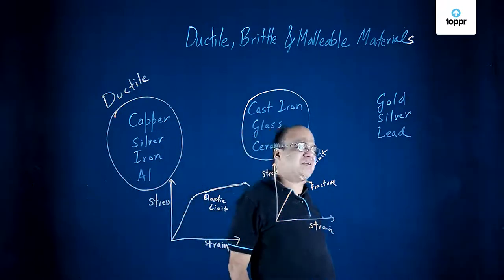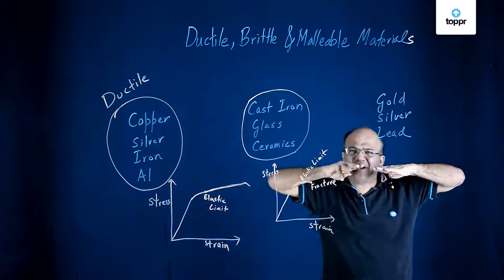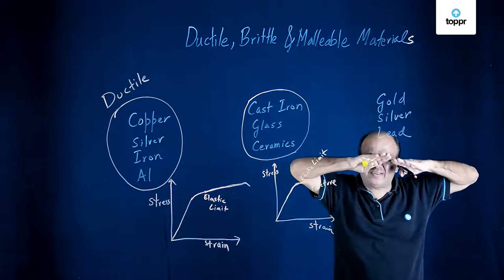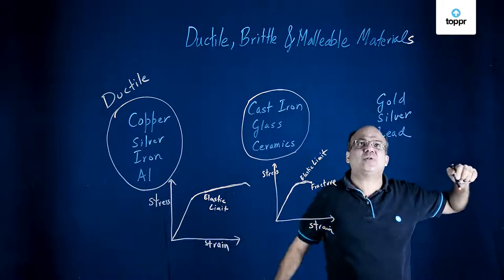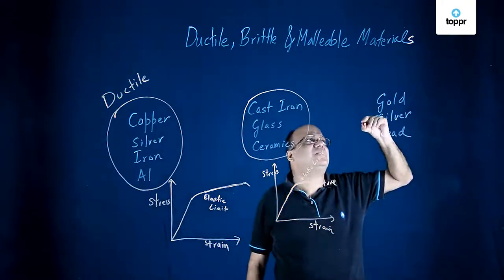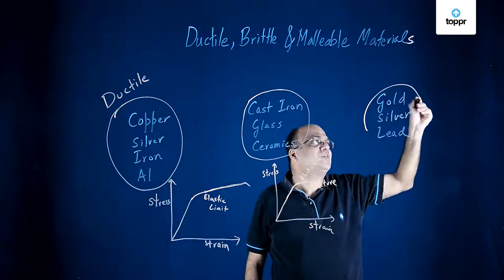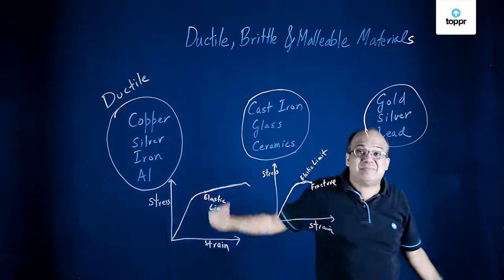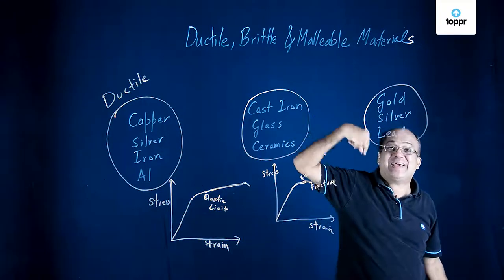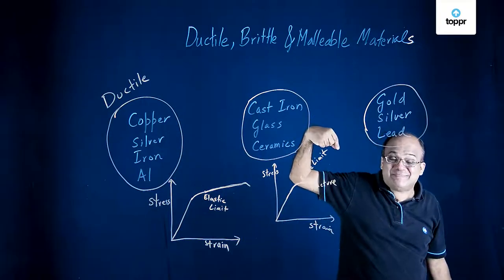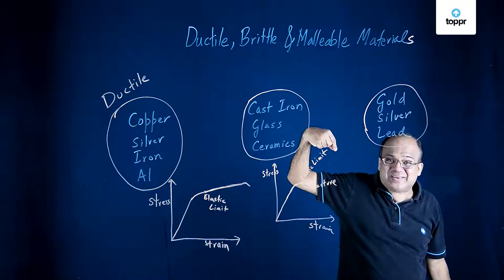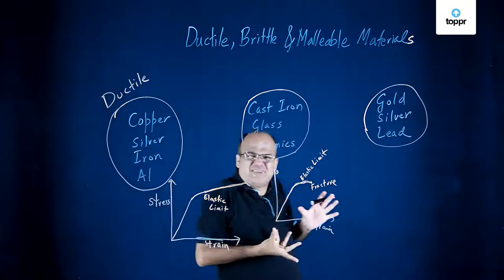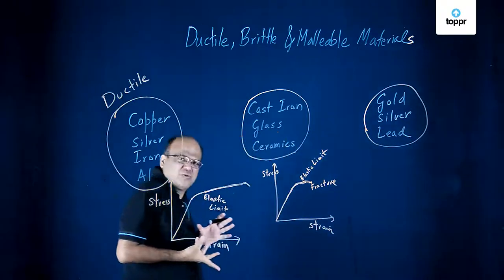Now, some materials we can beat down into thin sheets — those are known as malleable materials. Gold is a malleable material. Silver is a malleable material. Lead is a malleable material. So, these three kinds of materials you should know.